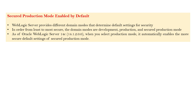The third feature is secure production mode enabled by default. When we configure a domain, we have two modes: development mode and production mode. Based on the selected mode, different features are automatically enabled. In production mode, some advanced configurations are enabled, specifically in terms of security. In order from least to most secure, the domain modes are development, production, and secure production mode.